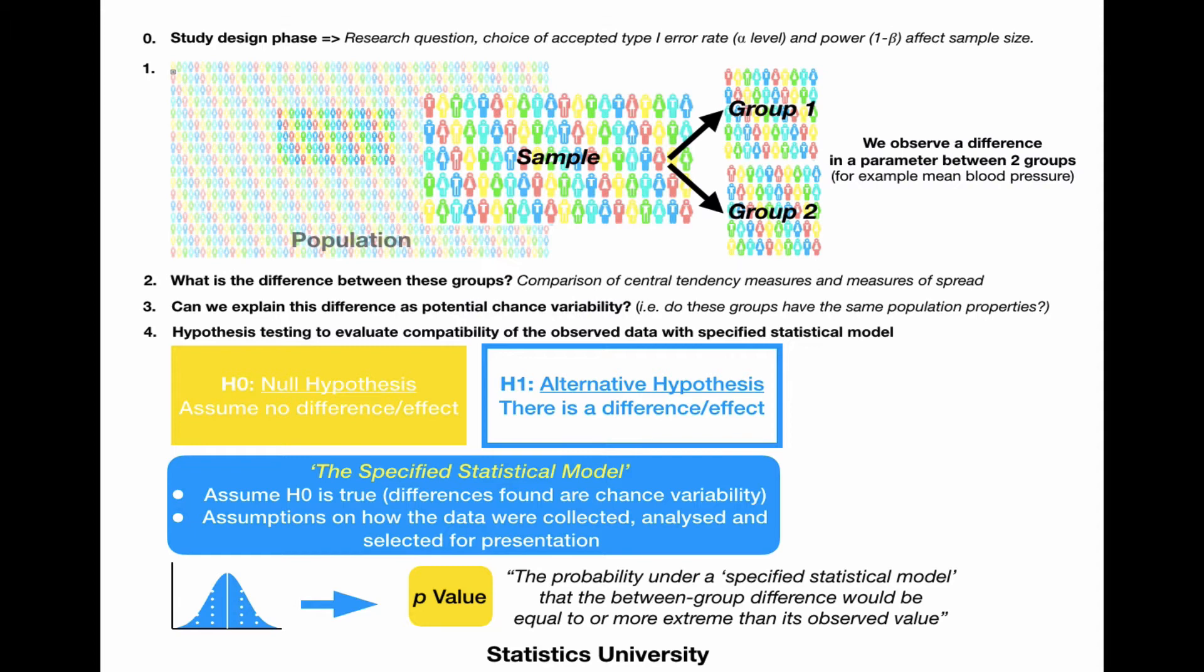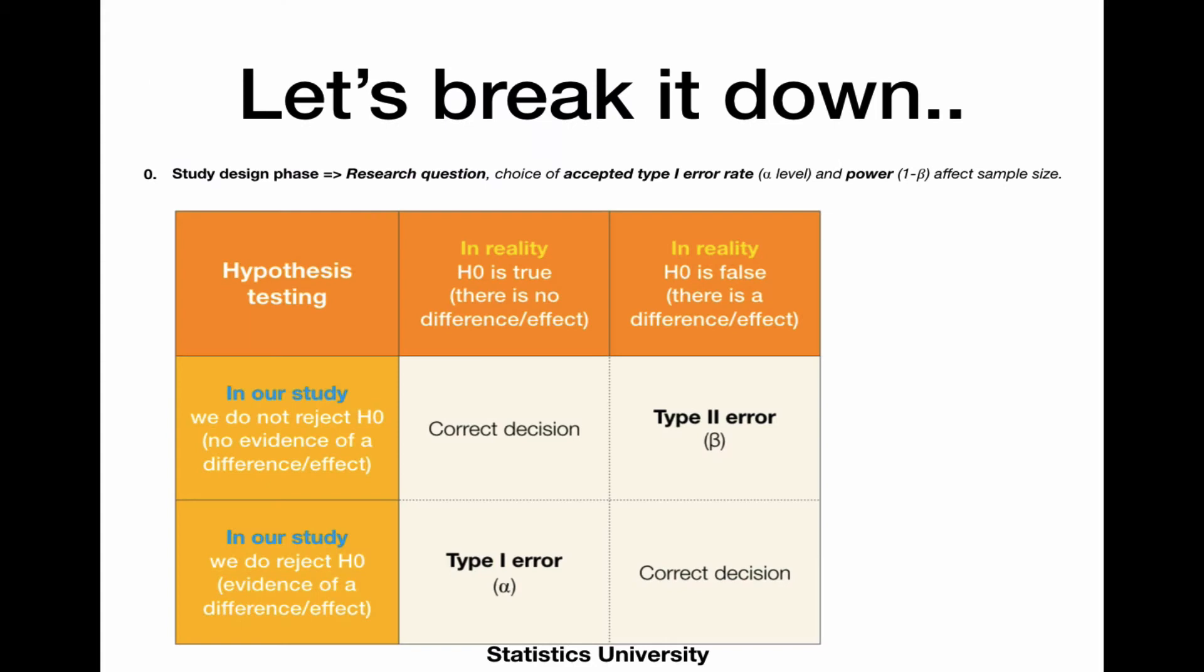We can also do this to estimate between group differences. Here we want to know whether we can explain this difference between the groups as potential chance variability. The p-value is defined as the probability under our specified statistical model that the between group difference would be equal to or more extreme than its observed value. Let's look at some of these things in more detail.